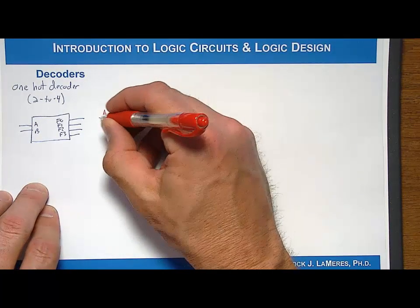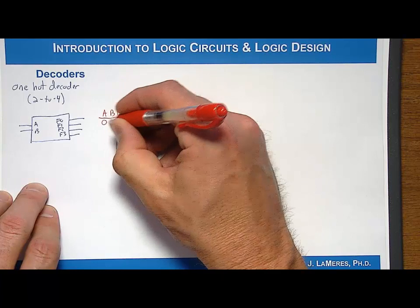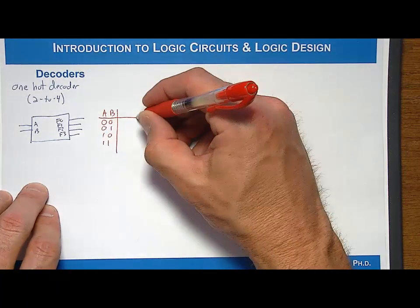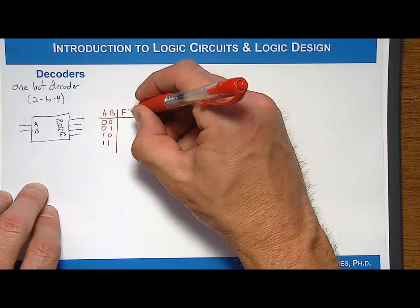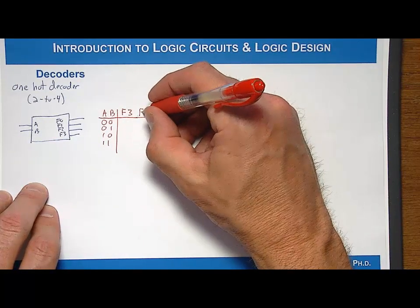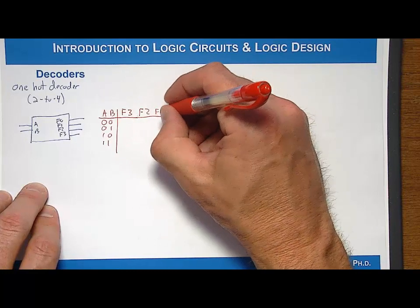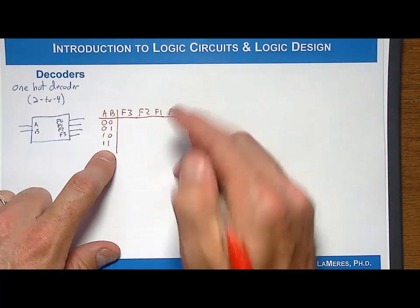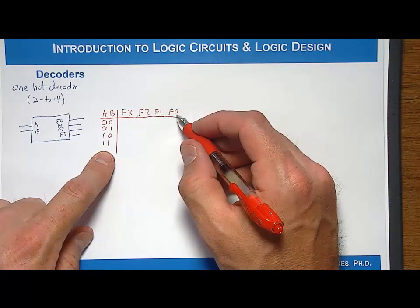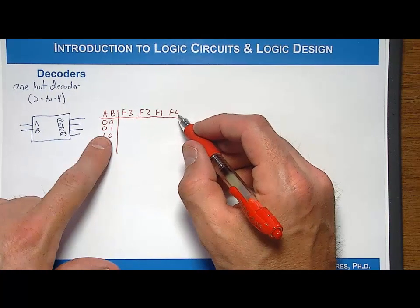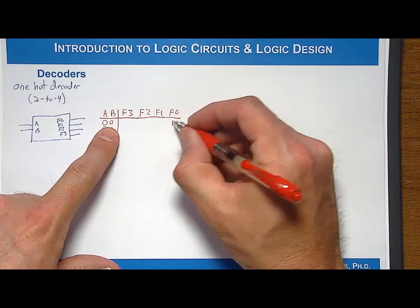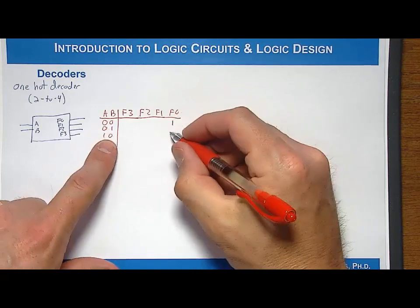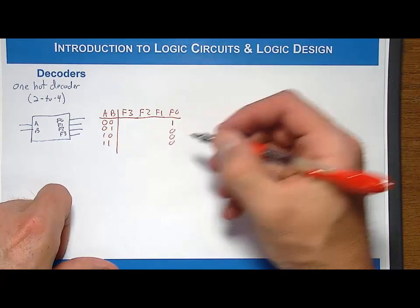Let's say you had A and B as the inputs, and you still list out each and every possible input code. Then you're going to list out all of the outputs in the same truth table. So in this situation, I'd have F3, F2, F1, and F0. The way the behavior of this one-hot decoder works is that each output is going to assert for one and only one input code. So F0 refers to it will assert for input code 00 or, said another way, decimal code 0. And all the other codes on the input, it will not be asserted.